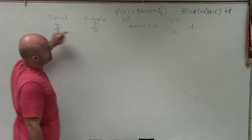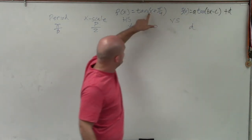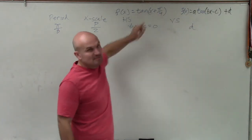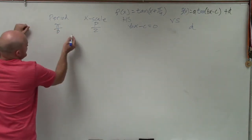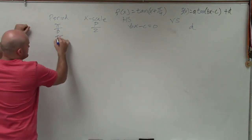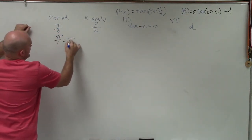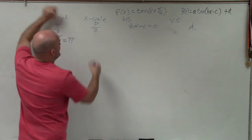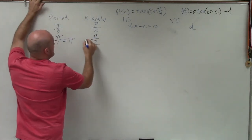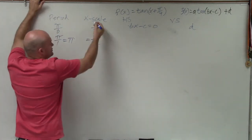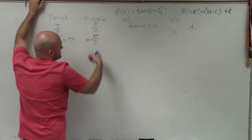Period is π divided by B. You can see there is no B in this case — nothing is being multiplied by x — so we can say it's 1. So my period is π. My x scale is going to be π divided by 2; just take your period, which is π, divided by 2.